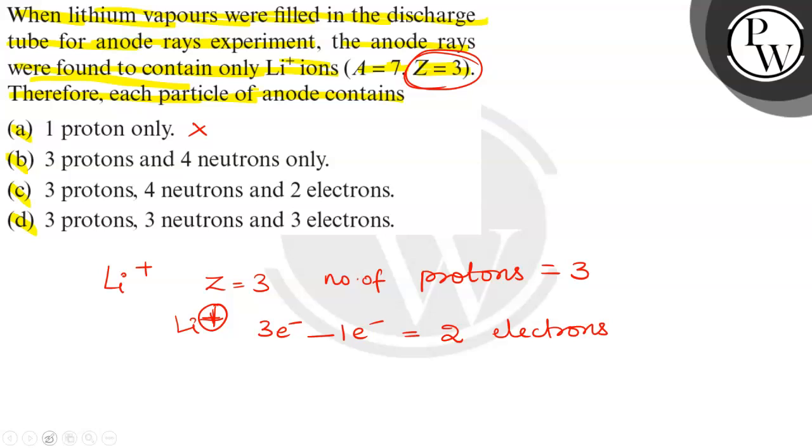Number of neutrons. The number of neutrons formula is A minus Z. A is mass number, so 7, and Z is atomic number, 3. Therefore, 7 minus 3 equals 4 neutrons.